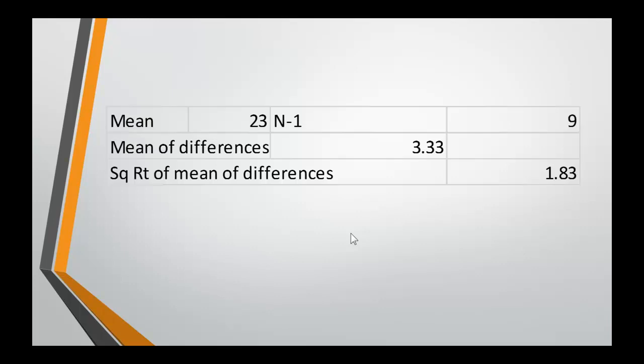Now we shall take the square root of the mean of the differences. In other words find the square root of 3.33. This gives an answer of 1.83 and that is our standard deviation.